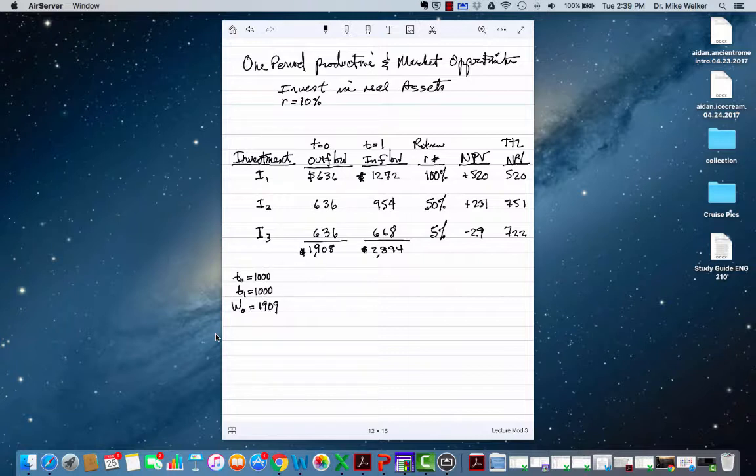Our wealth gets to increase, but we wouldn't want to take on the third project. I was going to get inflows of $668, but in present value terms, I don't want to take on that project.